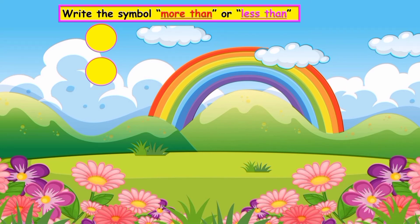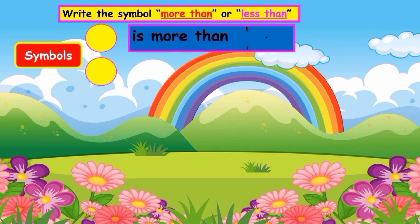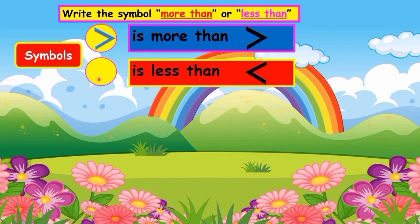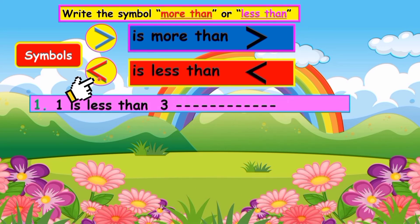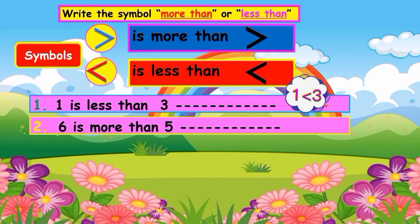Now open your book to page 22. This time you're going to write the symbol — write this symbol if it is more than, and this symbol if it is less than. Number one: one is less than three, so write one, the less-than symbol, and then three. Number two: six is more than five, so write six, more-than symbol, five.